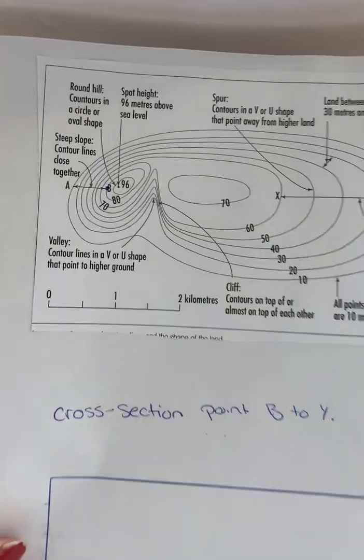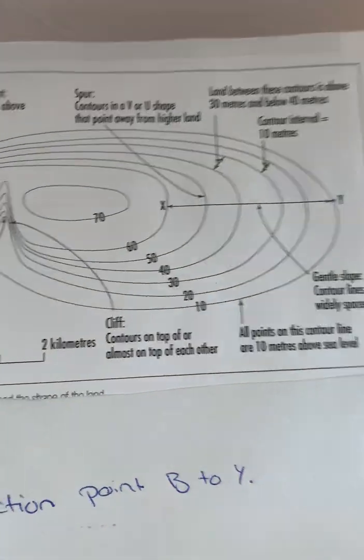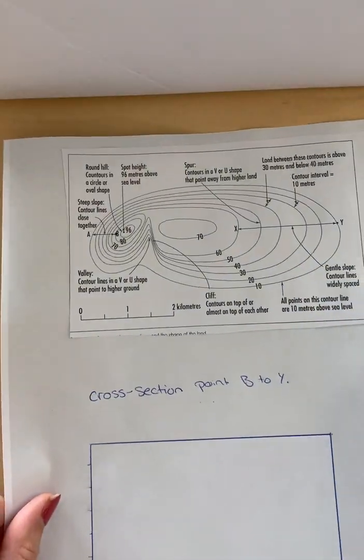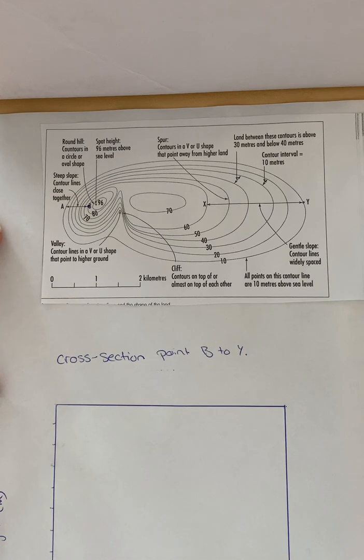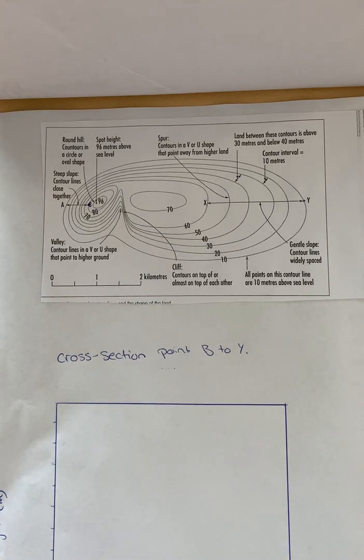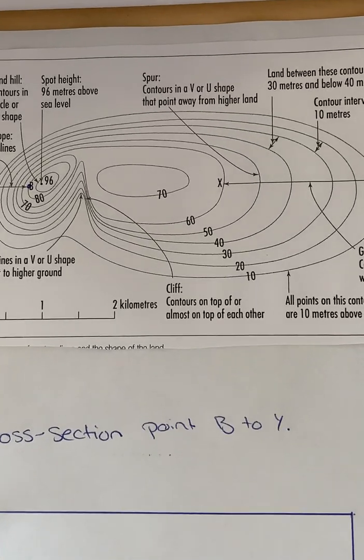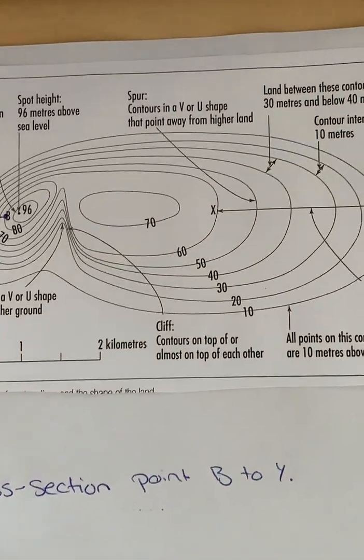The idea of drawing a cross section is so that you can see what this map looks like if you're actually standing up in front of the mountain and looking at it. It's to give us an idea of what the shape of the land is.